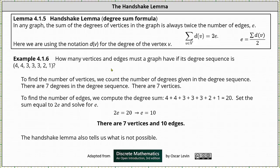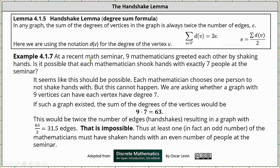The handshake lemma also tells us what is not possible. As an example, at a recent math seminar nine mathematicians greeted each other by shaking hands. Is it possible that each mathematician shook hands with exactly seven people at the seminar?